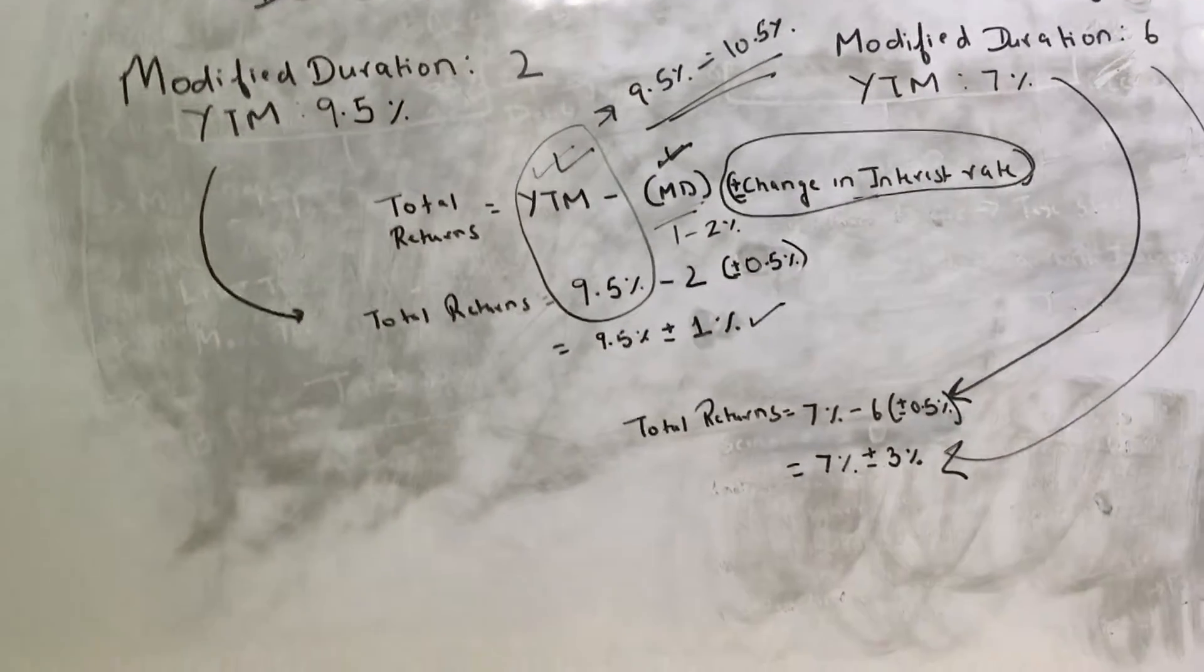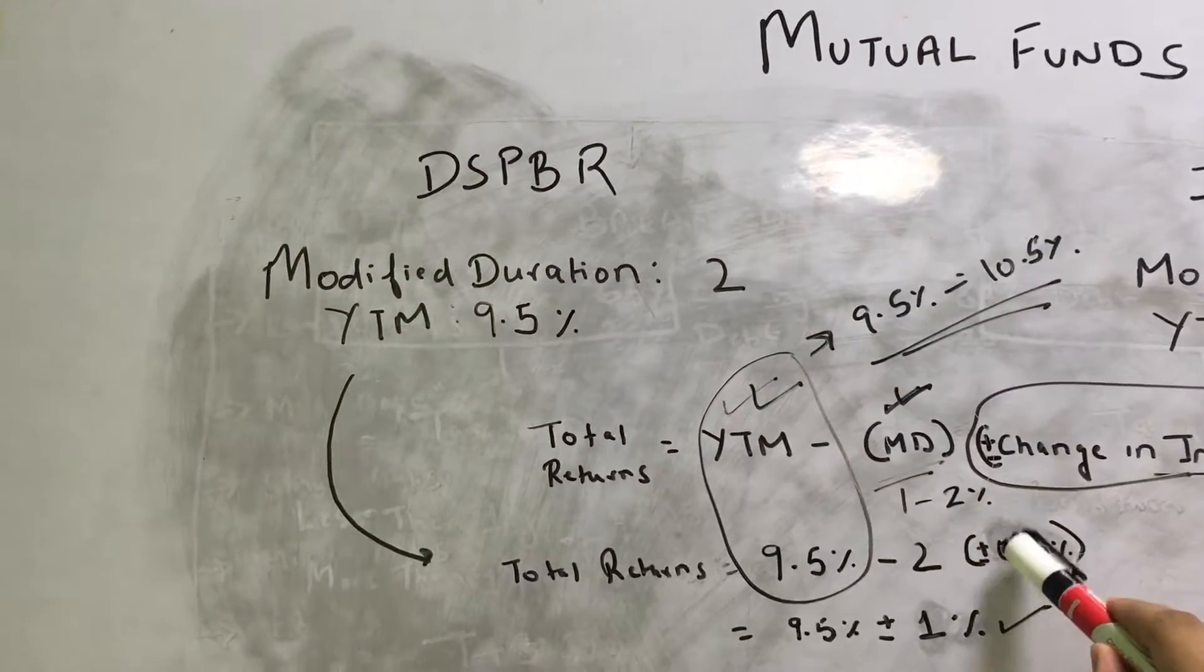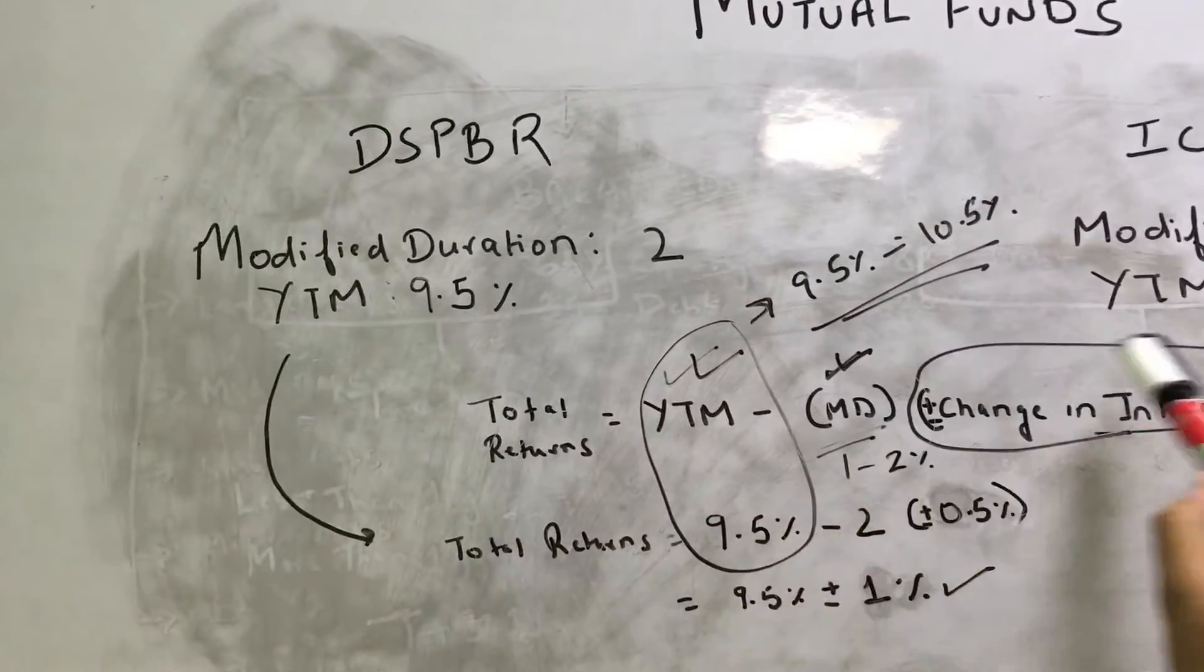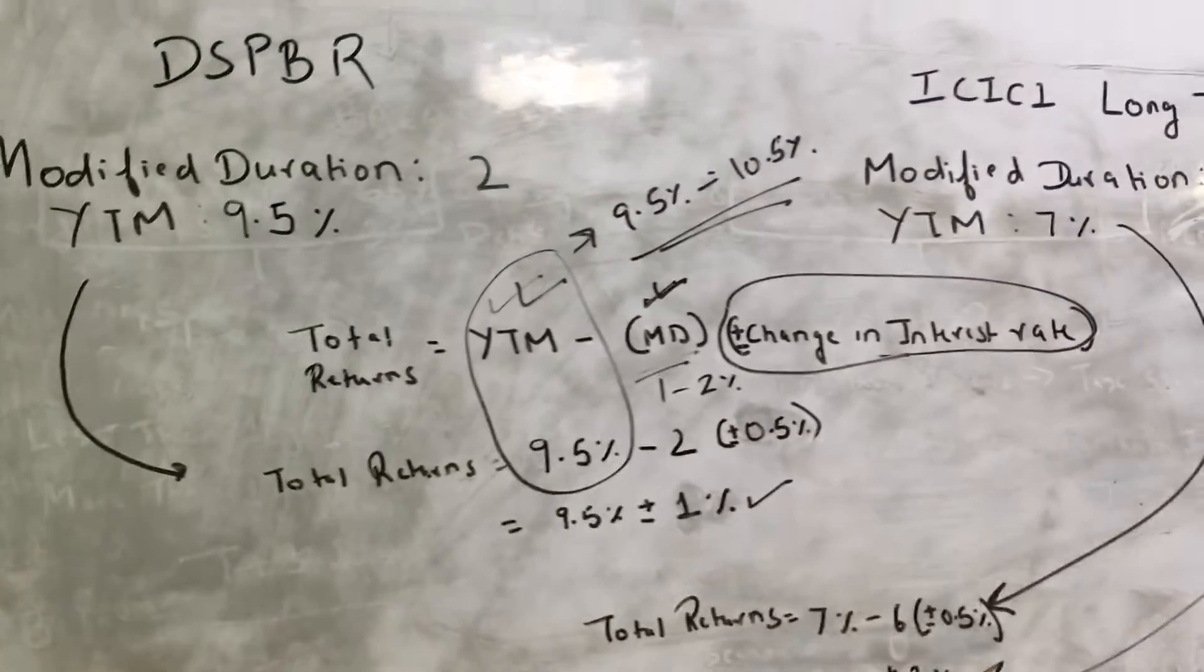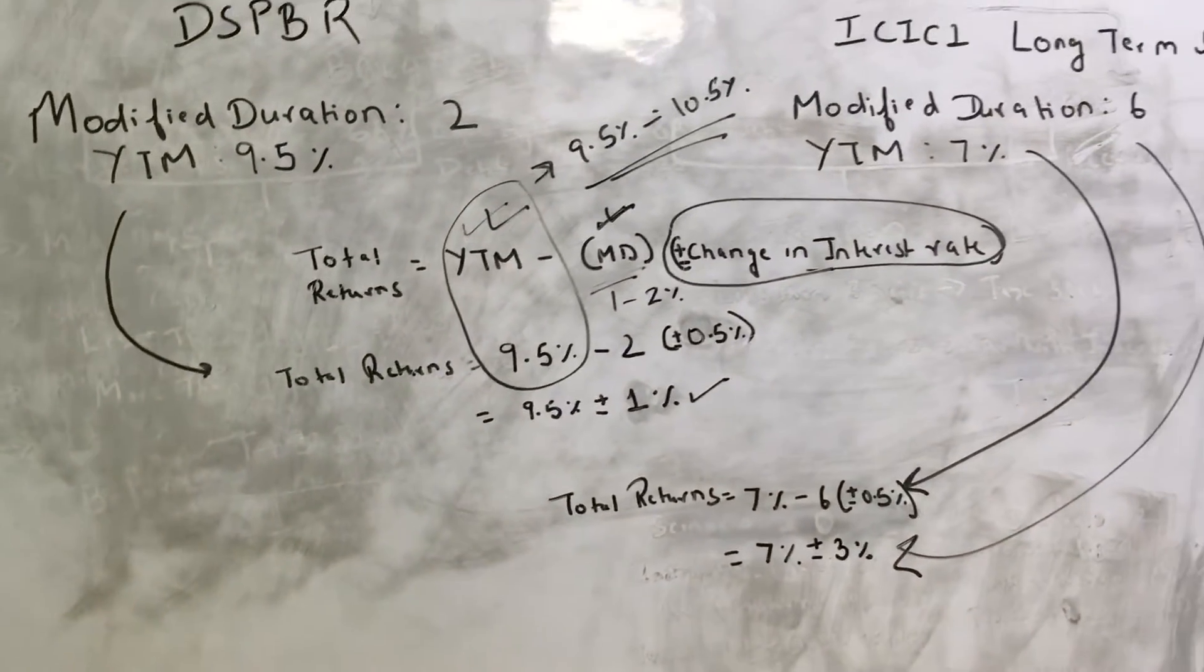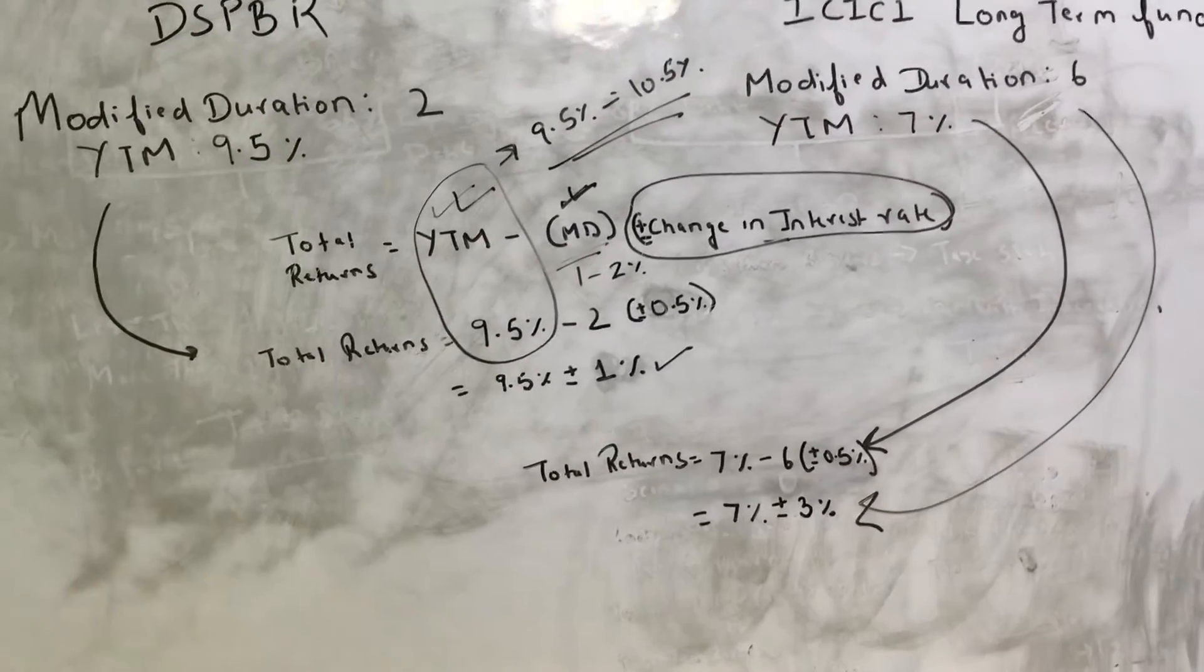I hope it was clear. So this modified duration is the factor that tells you the interest rate sensitivity that a product has, the returns have to the change in interest rate. This is again not a book formula, this is more of a general thumb rule of how things happen.